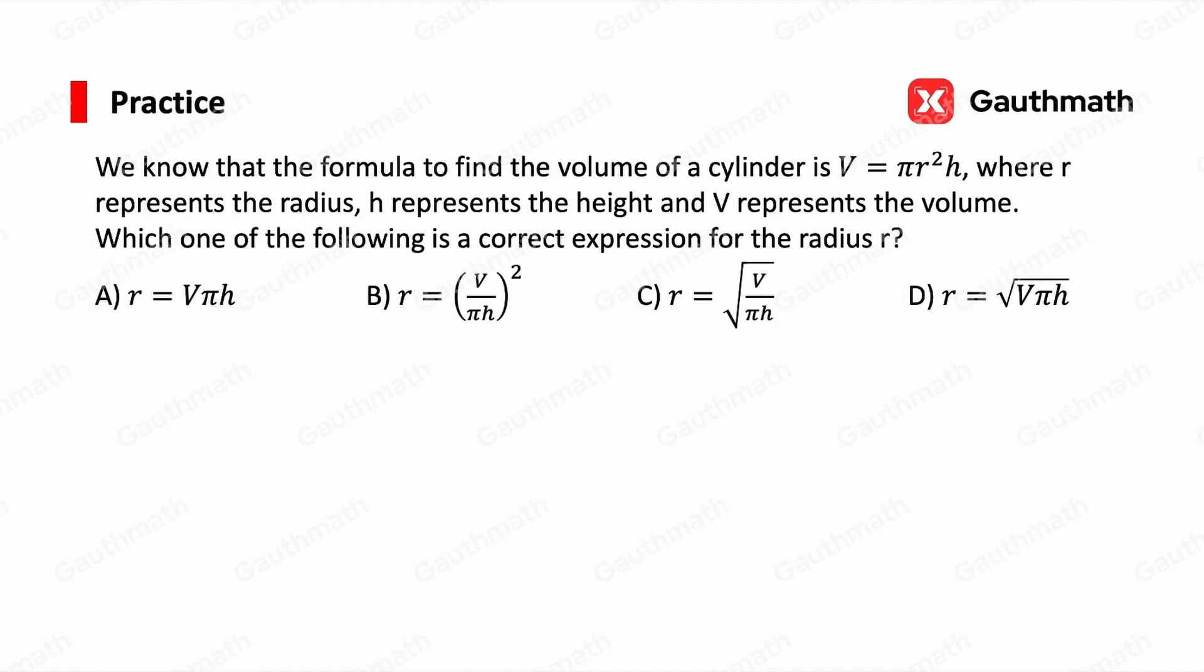Practice one: we know that the formula to find the volume of a cylinder is V = πr²h, where r represents the radius, h represents the height, and V represents the volume. Which one of the following is a correct expression for the radius r?